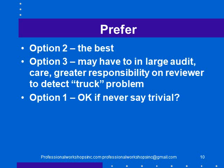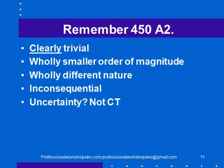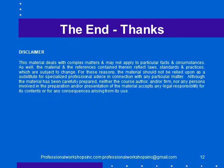My preference is option two — documenting at the end. Option three is okay in a large audit but places greater responsibility on the reviewer. Option one might work in a very small audit if the word trivial is never used. In all three options, I'd prefer a checklist step to confirm whether it was done and at what level. And remember 450A2: clearly trivial, not just trivial. Wholly different order of magnitude, wholly different nature, inconsequential. And if there's any uncertainty, it's not clearly trivial.